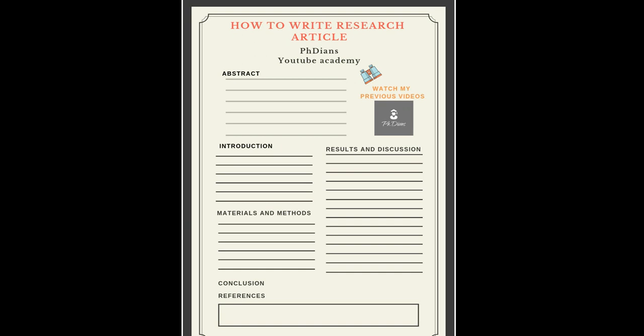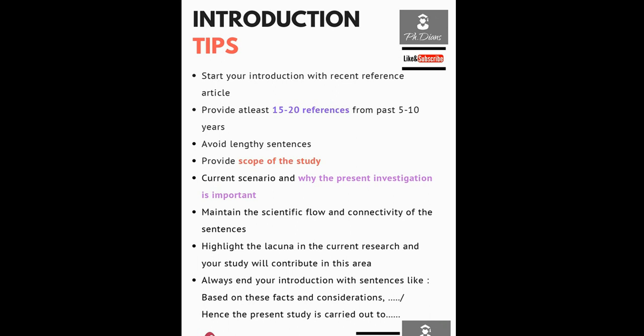Moving on to each component — here are some tips for writing the introduction. I recommend you start your introduction with recent references, referring to articles from 2019, 2018, and 2017. In the introduction, you need to provide at least 15 to 20 references from the past 5 to 10 years, which shows reviewers and editors that you are up to date in a particular area.